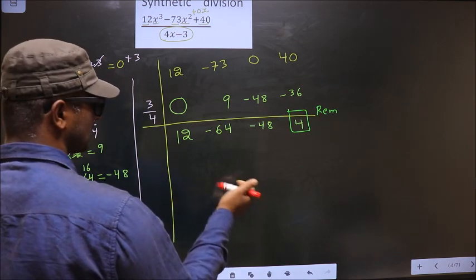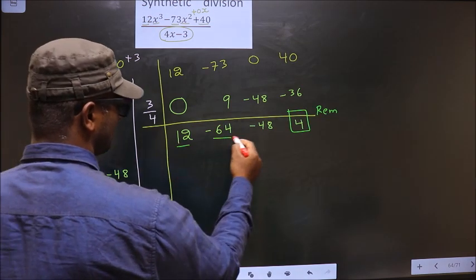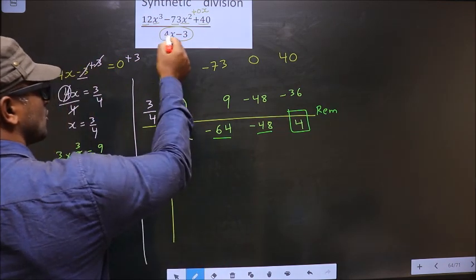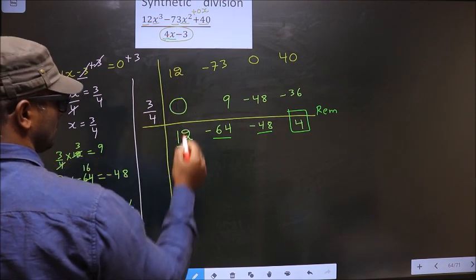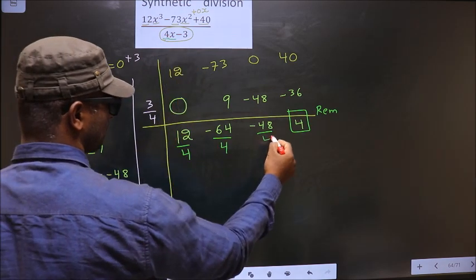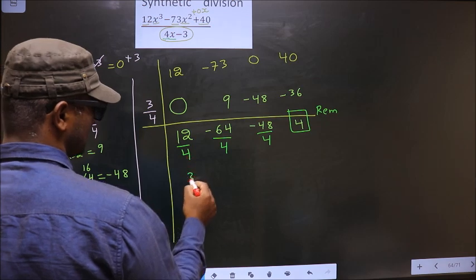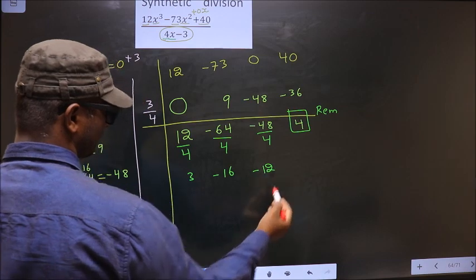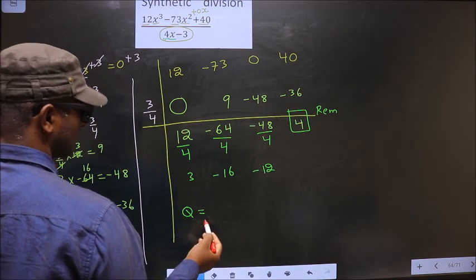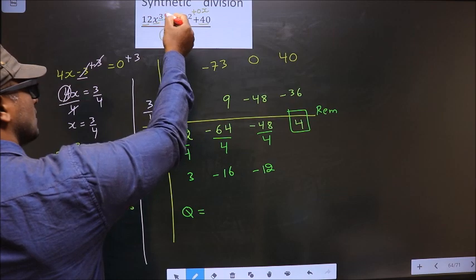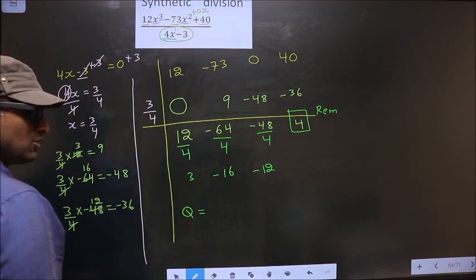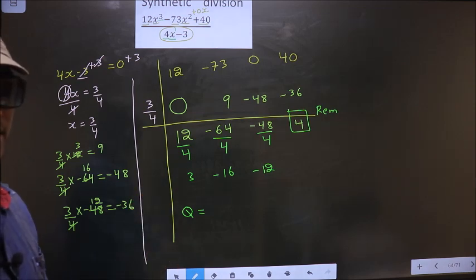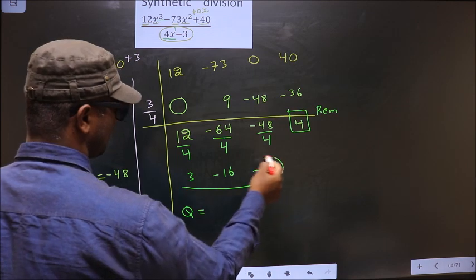And the before numbers, you should divide by the x coefficient present in the denominator. So in the denominator, x coefficient is 4. So you should divide by 4. So here I get 3, here I get minus 16, here I get minus 12. Now our quotient is: numerator is cubic, denominator is linear, so quotient will be quadratic.